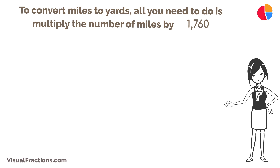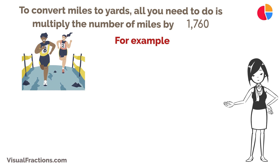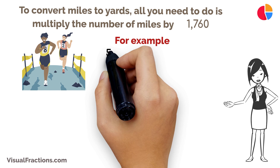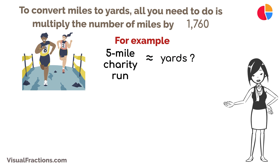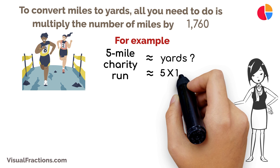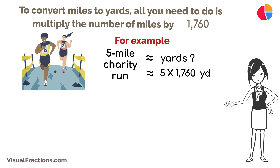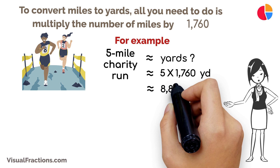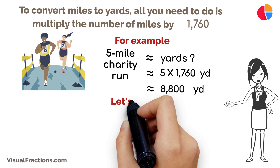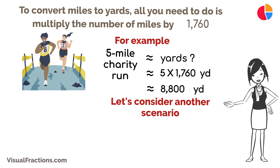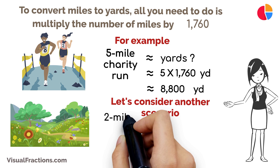For example, if you're organizing a five-mile charity run and want to know the total distance in yards, simply multiply five miles by 1,760. That gives you a total of 8,800 yards.